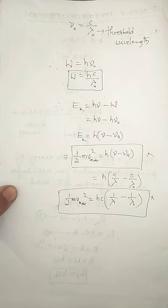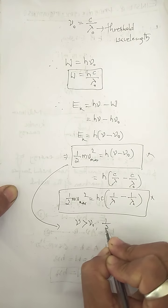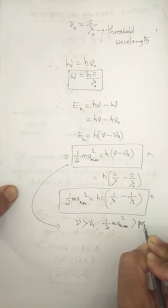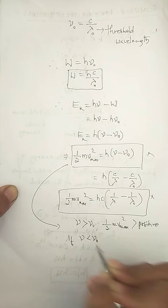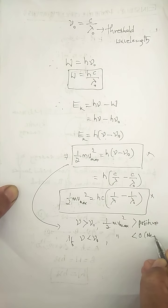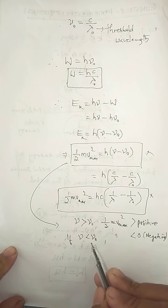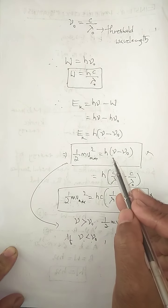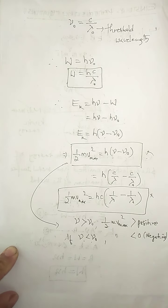From this equation, if ν is greater than ν₀, the maximum kinetic energy becomes positive, meaning there is ejection of electrons and they move with maximum kinetic energy. But if ν is less than ν₀, then the kinetic energy becomes negative, which is not possible — so the photoelectric effect cannot occur when the frequency of incident light is less than the threshold frequency. Albert Einstein's equation is completely in agreement with the explanation of the photoelectric effect, and for this work, Einstein was awarded the Nobel Prize.